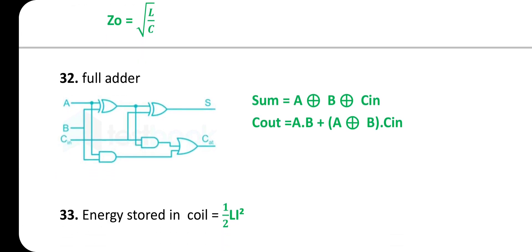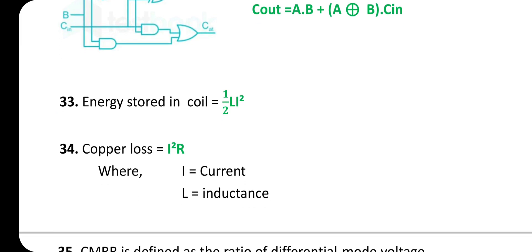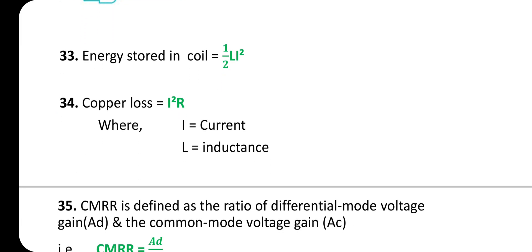Full adder circuit uses two XOR gates, two AND gates, and one OR gate. Sum = A XOR B XOR C_in. C_out = (A · B) + ((A XOR B) · C_in). Energy stored in a coil = (1/2)LI². Copper loss = I²R, where I is the current, L is the inductance, and R is the resistance.